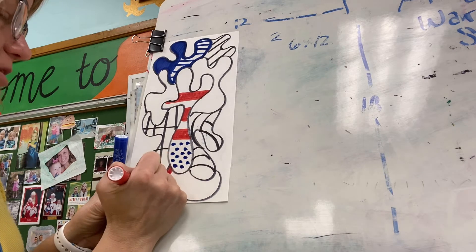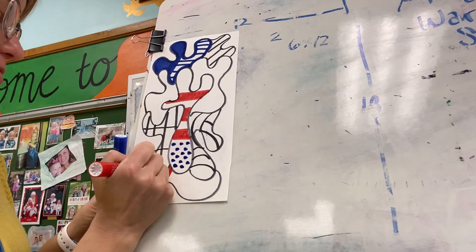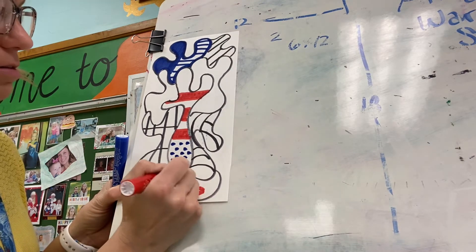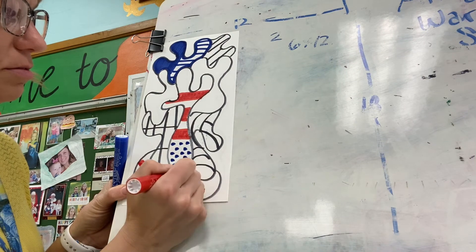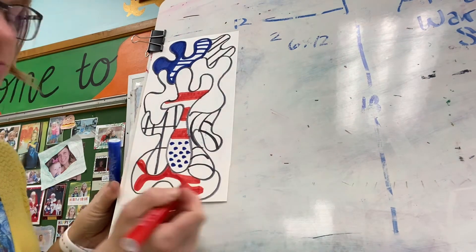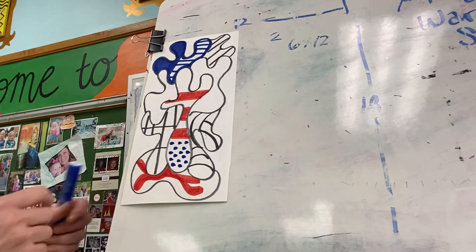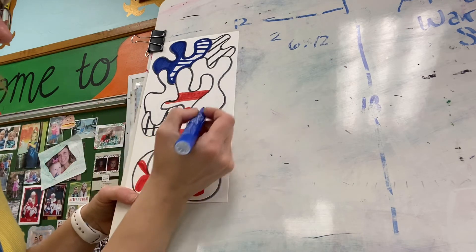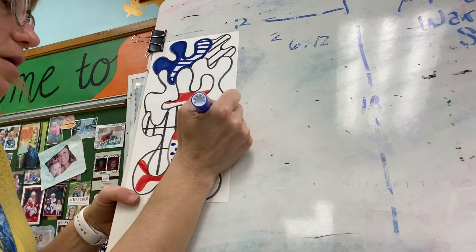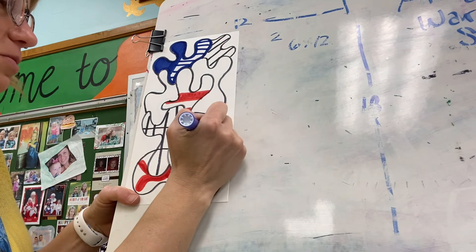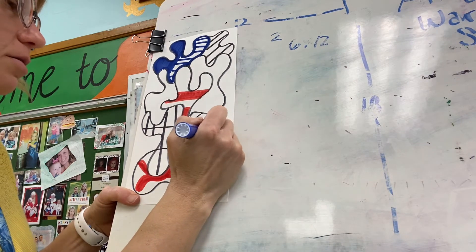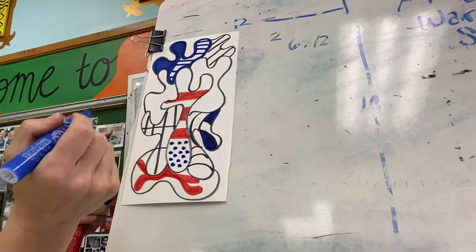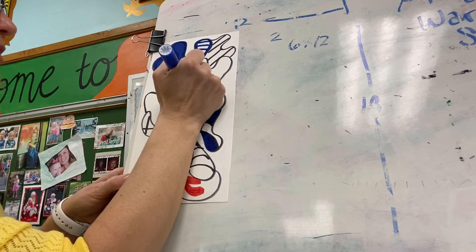Some of the designs that he created have like these organic shapes inside. You can color in some of the spaces that you have. Your black lines with colors, blue or red. You can obviously leave some spaces white. Oh, I know what I wanted to do. More polka dots up here.